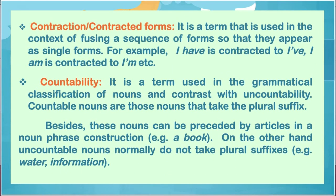Contraction or contracted forms — it is a term used in the context of fusing a sequence of forms so that they appear as single forms. For example, 'I have' is contracted to 'I've' — that is, 'I' with an apostrophe. 'I am' is contracted to 'I'm' — that is, 'I am' with an apostrophe, as you can see in this particular presentation.